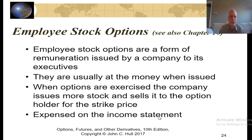Another type of option is an employee stock option, generally given as an incentive for employees to perform well and raise the stock price. Employee stock options are a form of remuneration issued by a company to its executives, aligning the interests of investors and top management — both want the stock price to go up. They are usually at the money when issued. When exercised, the company issues more stock and sells it to the option holder for the strike price, and these must be expensed on the company's income statement.